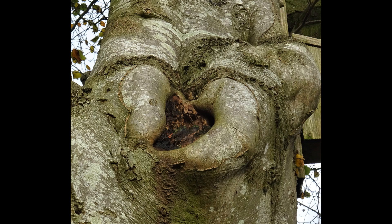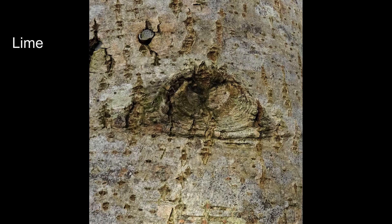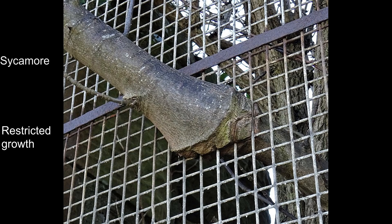Animals' wounds are generally healed, whilst in trees they're sealed — that is, the tree grows over the wound itself. And the tissues are not the same, so you form a scar, sometimes called a cicatrix, which is much more prominent than you'd have in an animal.